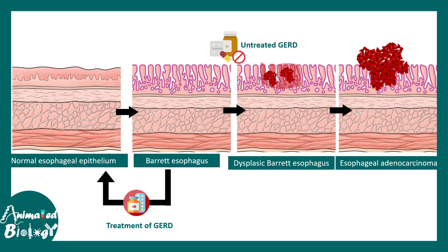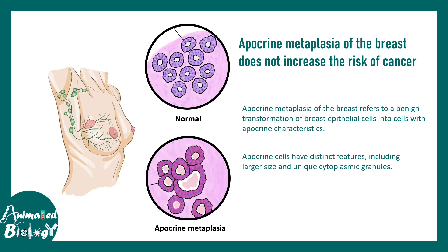It is important to note that metaplasia itself is non-neoplastic or non-cancerous, and it is a reversible change. However, a prolonged untreated condition might lead to a cancer situation. Exceptions exist — for example, apocrine metaplasia of the breast, which refers to the benign transformation of breast epithelial cells into cells with apocrine characteristics, does not increase the risk of cancer.